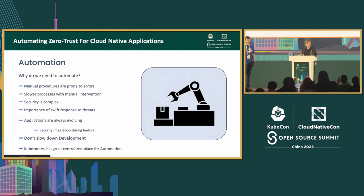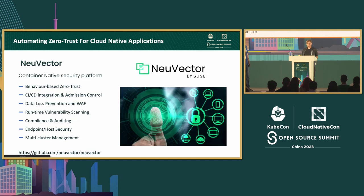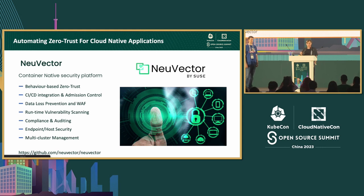Kubernetes is a great place to insert this automation — we can see containers and pods spinning up, and all network traffic. That's where NuVector comes in. NuVector gives us behavior-based Zero Trust: learn how the application works, learn all the protocols involved and all binaries that will be called, put those in a profile, and use that as the security basis.